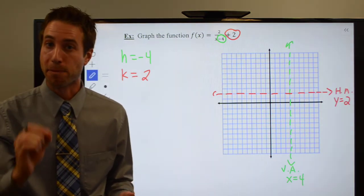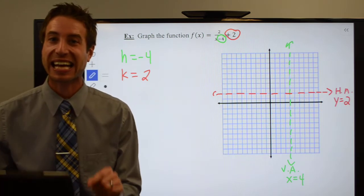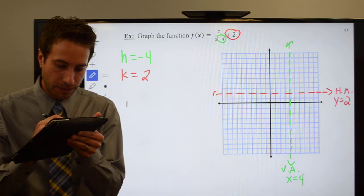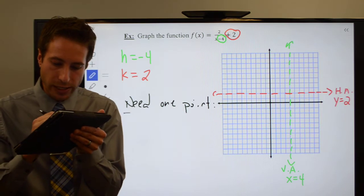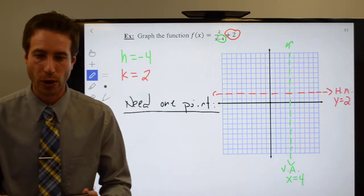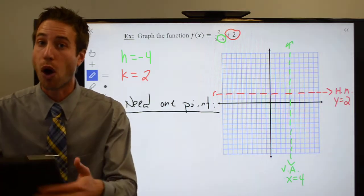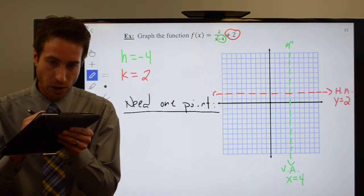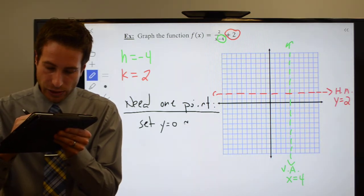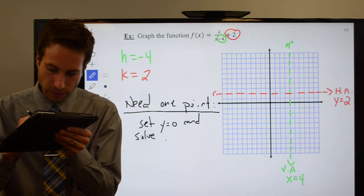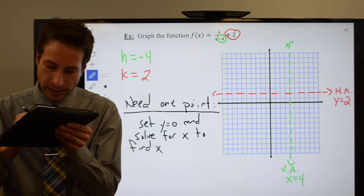Now, where does the graph go? How do I draw this graph? You need to find a point. The easiest point to find is where you cross the X axis. So we need one point. You're always going to need to find one point. And the easiest point to find is where you cross the X axis, which is when Y equals 0.